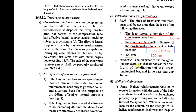The diameter of polygonal links or lateral ties shall not be less than one-fourth of the diameter of the largest longitudinal bar, and in no case less than 16 mm.